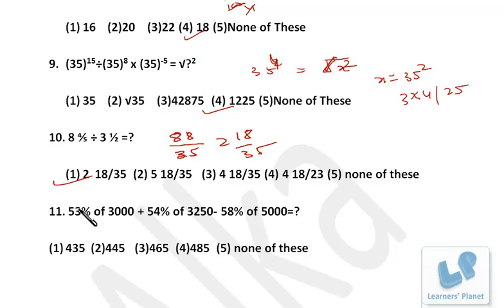Now see this problem. First of all, just remove the percentage sign and remove the two zeros—put a decimal over here. And similarly here, 32.5, instead write it as 27 and make it double of that. So it's 65. So precisely your calculation is 53 into 30 plus 27 into 65 minus 58 into 50.